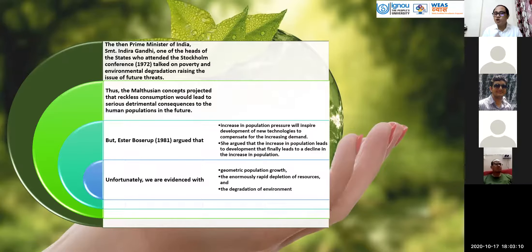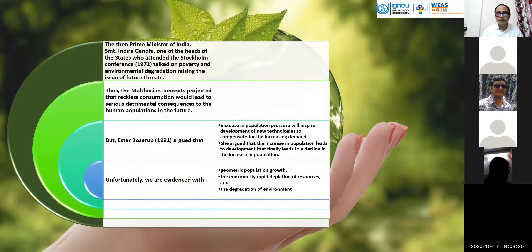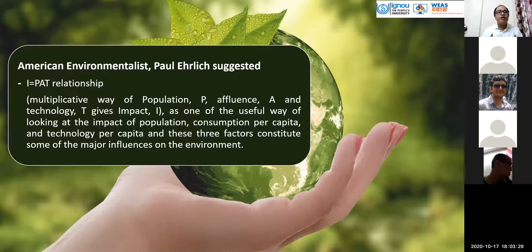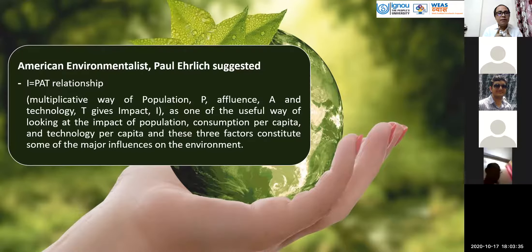Unfortunately, we are witnessing geometric population growth, enormously rapid depletion of resources, and finally degradation of the environment. Ehrlich also suggested the I=PAT relation: impact is the multiplicative product of population, affluence, and technology.